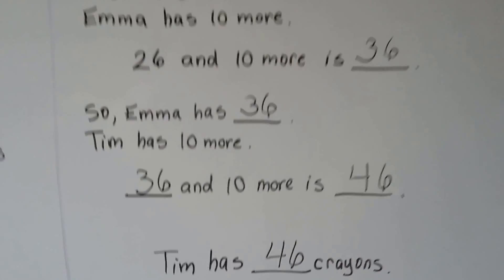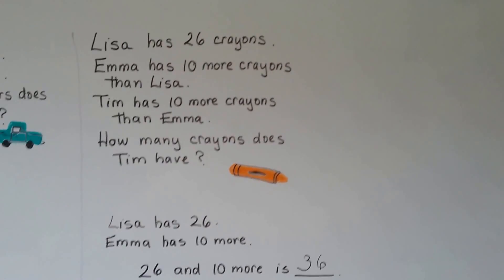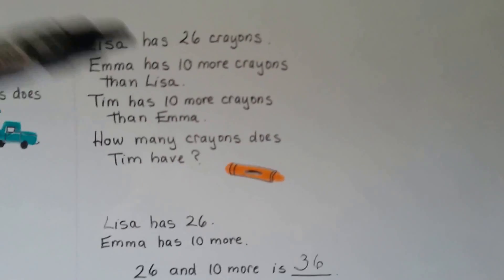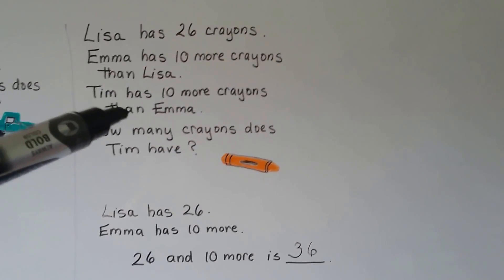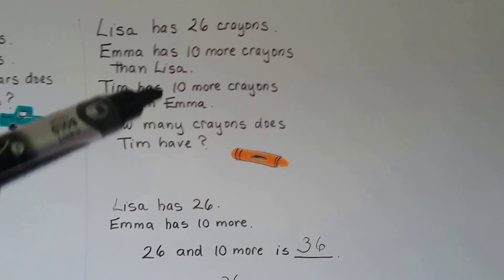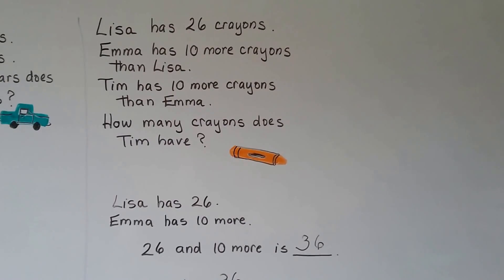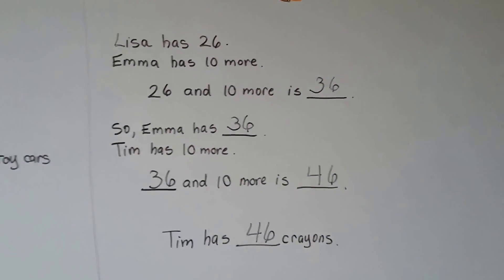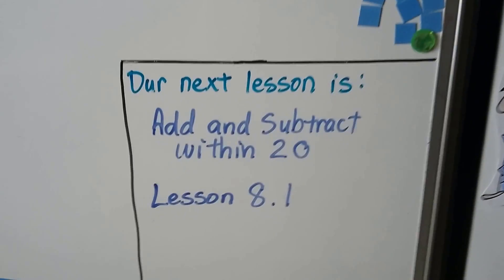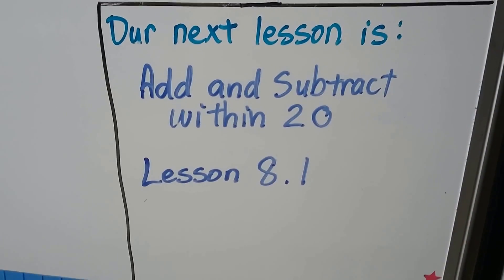So did you see how we solved that? We solved the first part — Lisa had 26 crayons and Emma had 10 more, so we found Emma's number first. Then we figured out 10 more than Emma's to find Tim's. There are other ways to solve this, but we're working on 10 more right now. Our next lesson is add and subtract within 20 — lesson 8.1, two-digit numbers.